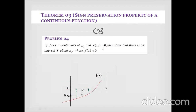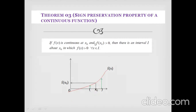Similarly, if f(x) is continuous at x₀ and f(x₀) < 0, then there is an interval I about x₀ where f(x) < 0. That is the corresponding sign preservation result for negative values.